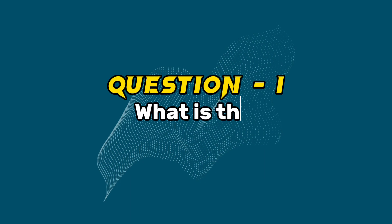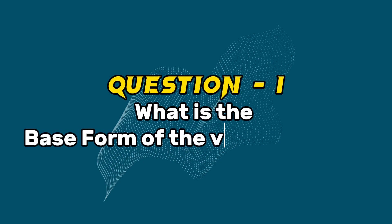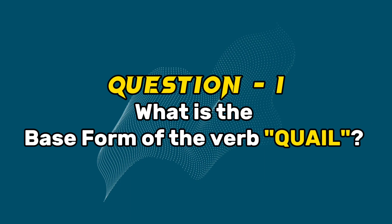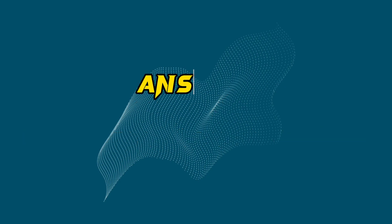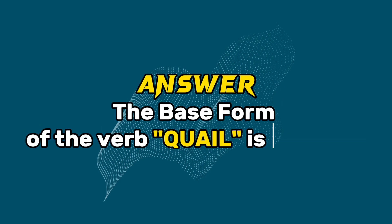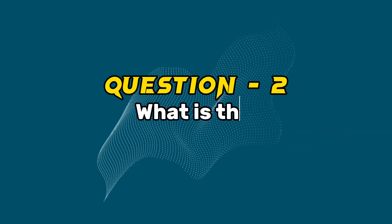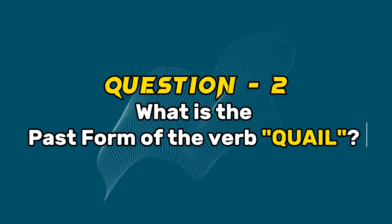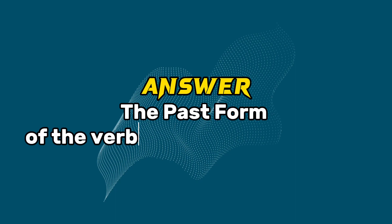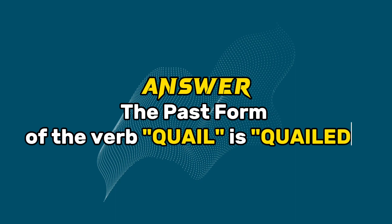Question 1: What is the base form of the verb Quail? Answer: The base form of the verb Quail is Quail. Question 2: What is the past form of the verb Quail? Answer: The past form of the verb Quail is Quailed.